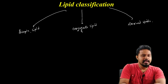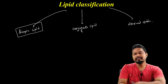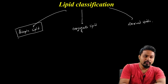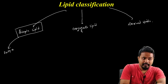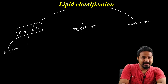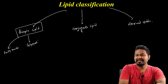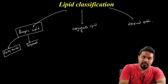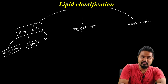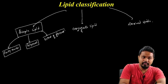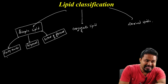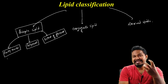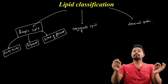Simple lipids include fatty acids, glycerol, and esters of glycerol. Fatty acid is a carboxylic acid type compound with a carbon chain. Fatty acids can have a very long carbon chain.